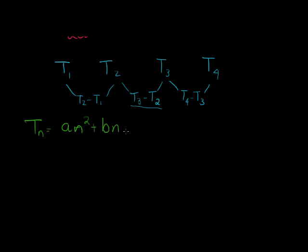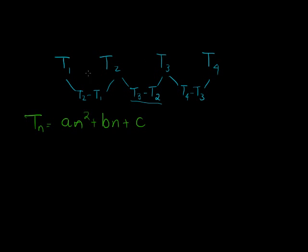Let's use an easier formula. Remember that Tn equals an squared plus bn plus c. Let's substitute into that. When n equals 1, term 1 equals a times 1 squared, which is just a, plus b times 1, which is b, plus c.